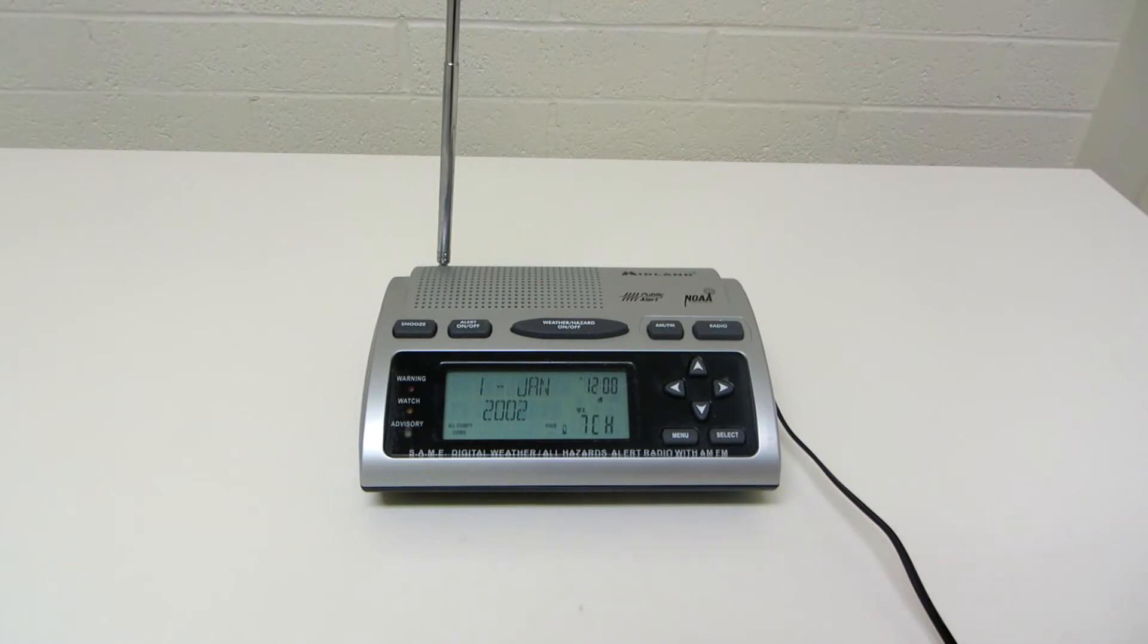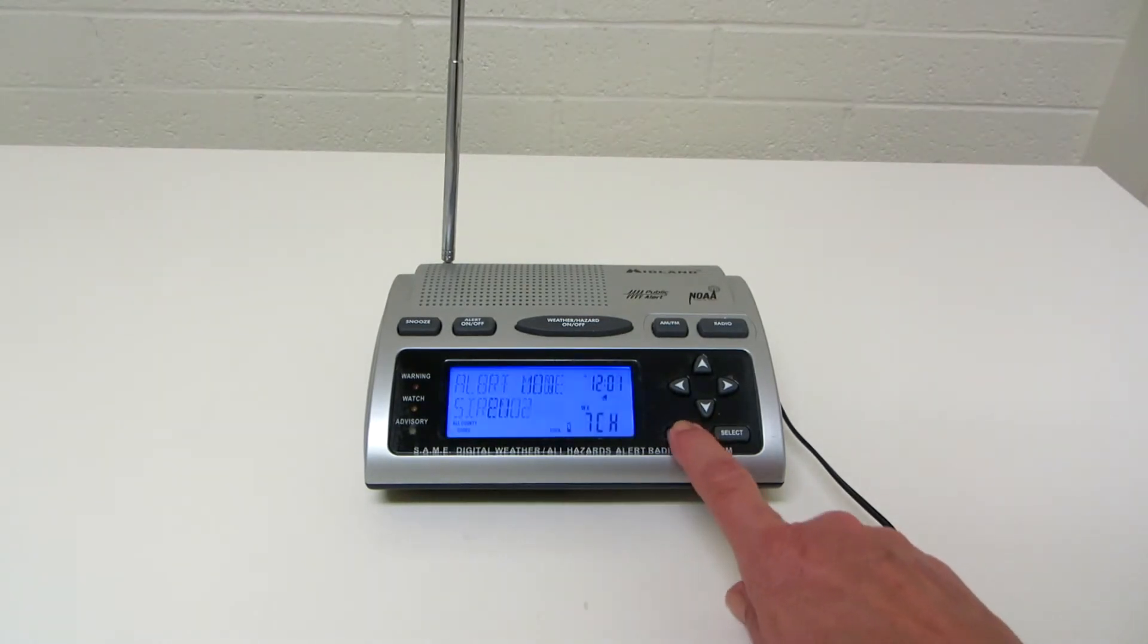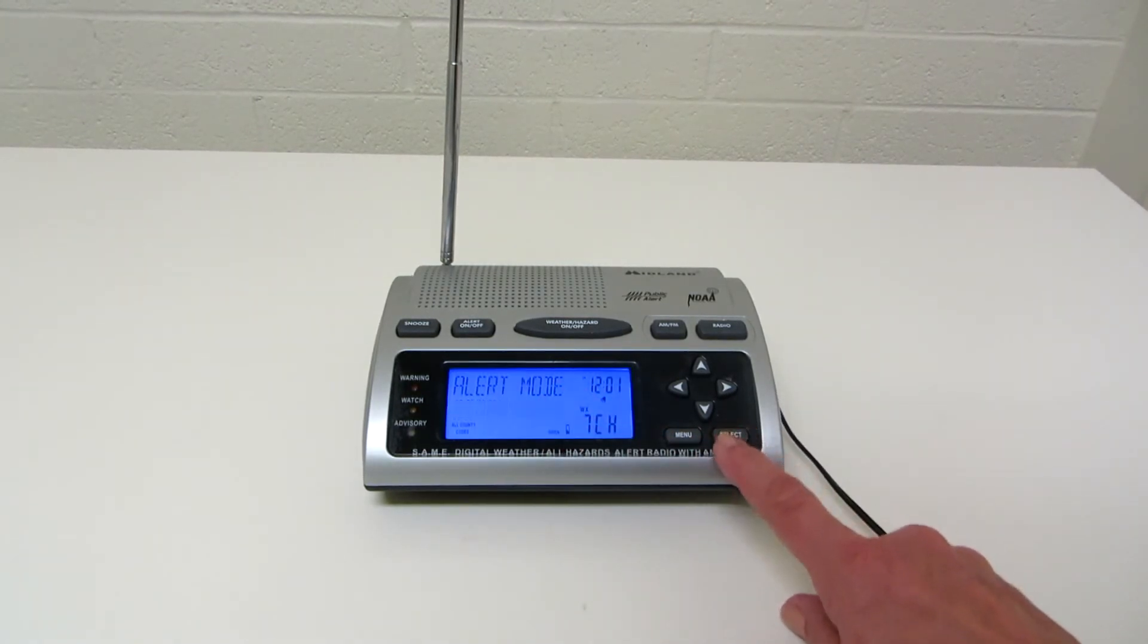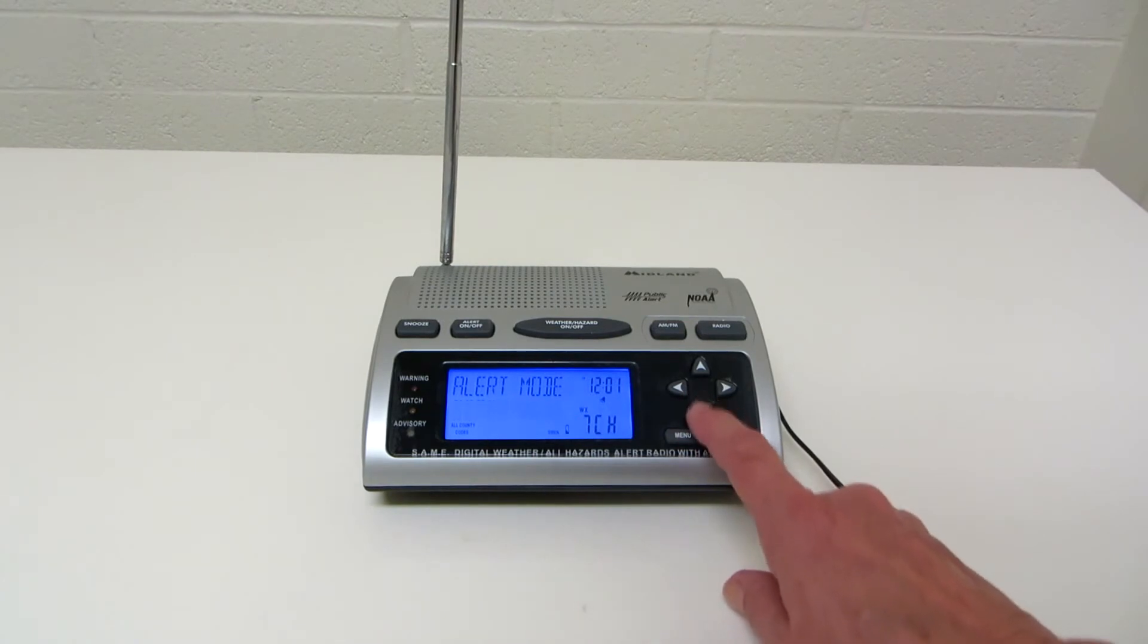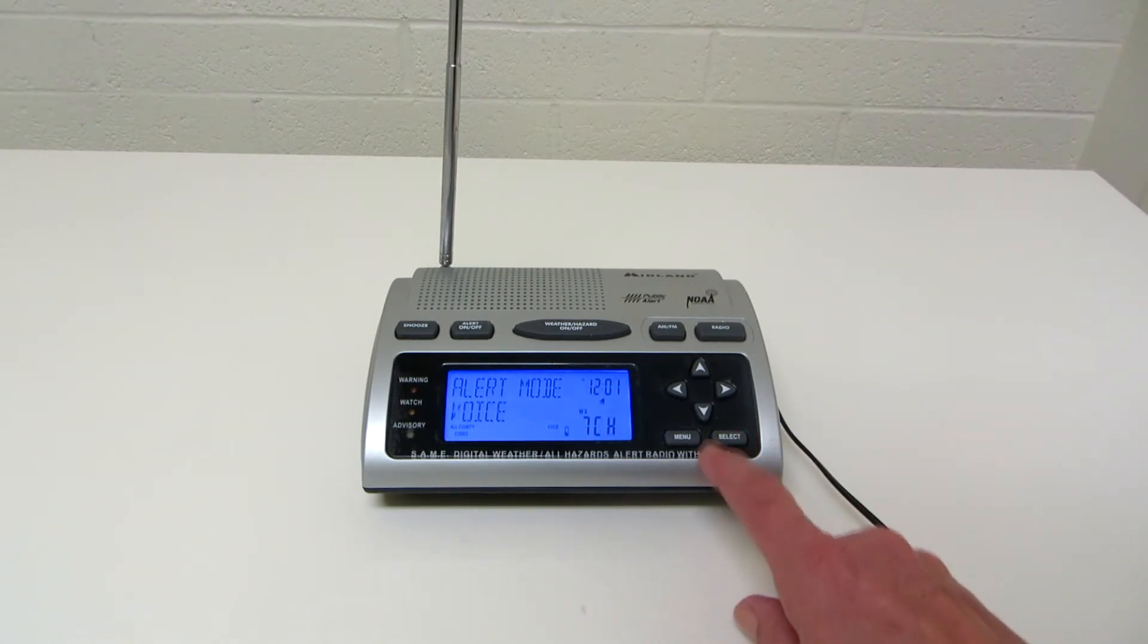You want to press the menu button and it begins with alert mode. If you want to work on that area, you push select. Then with the up and down button, you can have siren or voice. Then you push select and now that's set to voice.